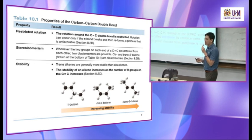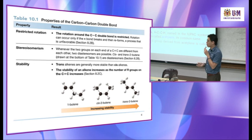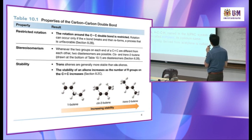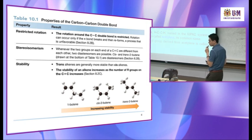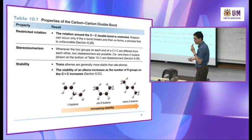If you have two triple bonds you use 'diyne', and three triple bonds 'triyne'. You need to be sure about the pronunciation — it could be 'diyne' and 'triyne'.